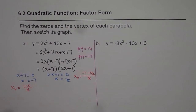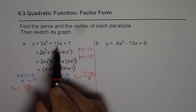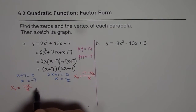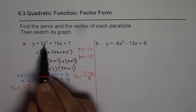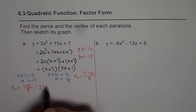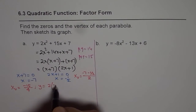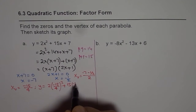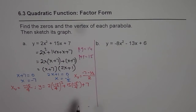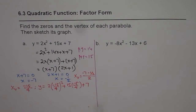To find the y-value of the vertex, substitute x = -15/4 into the original equation: y equals 2 times (-15/4) squared plus 15 times (-15/4) plus 7. This calculation is a bit complex and you can work it out using a calculator.